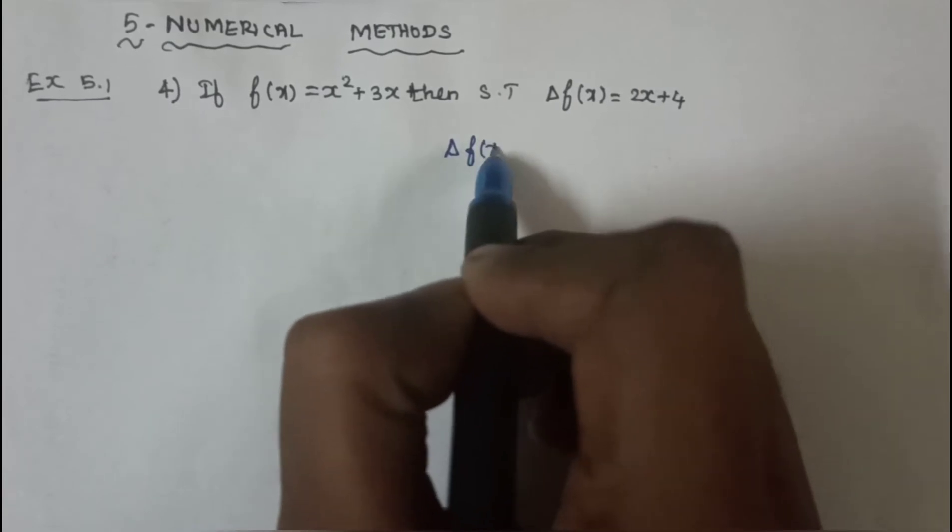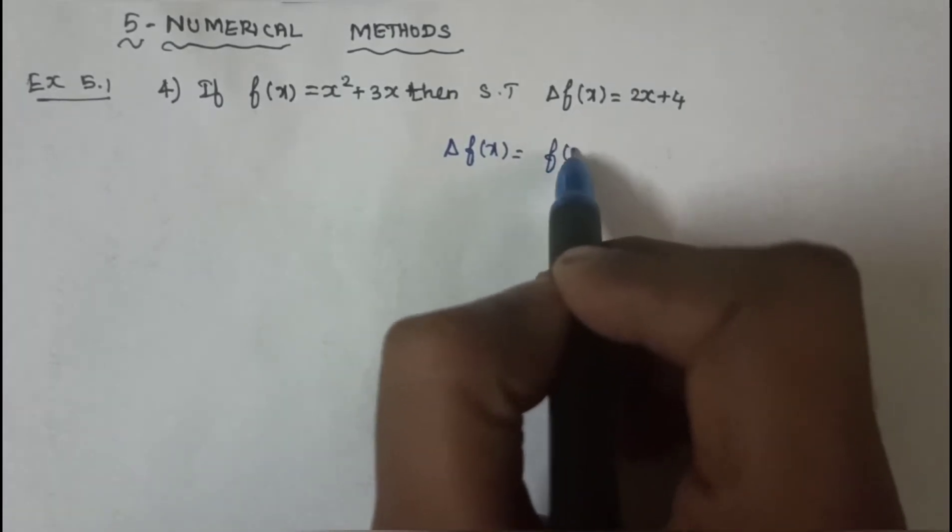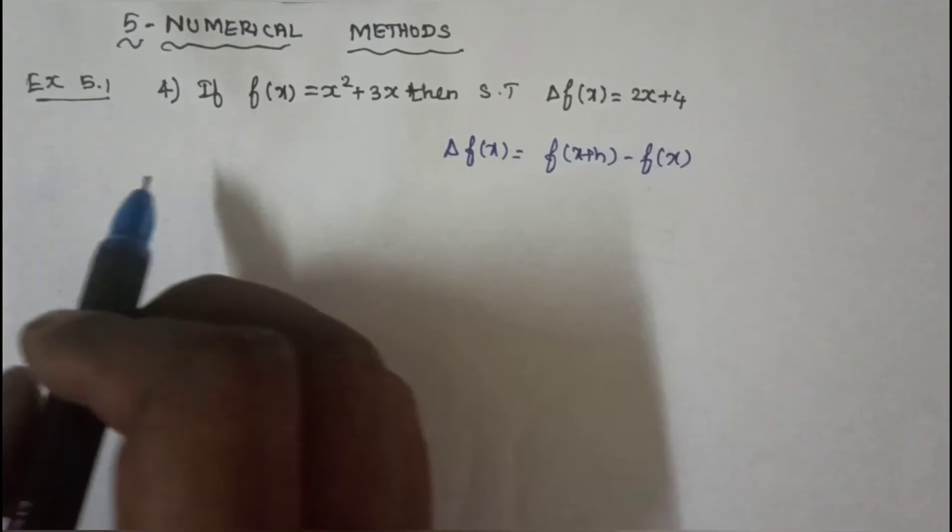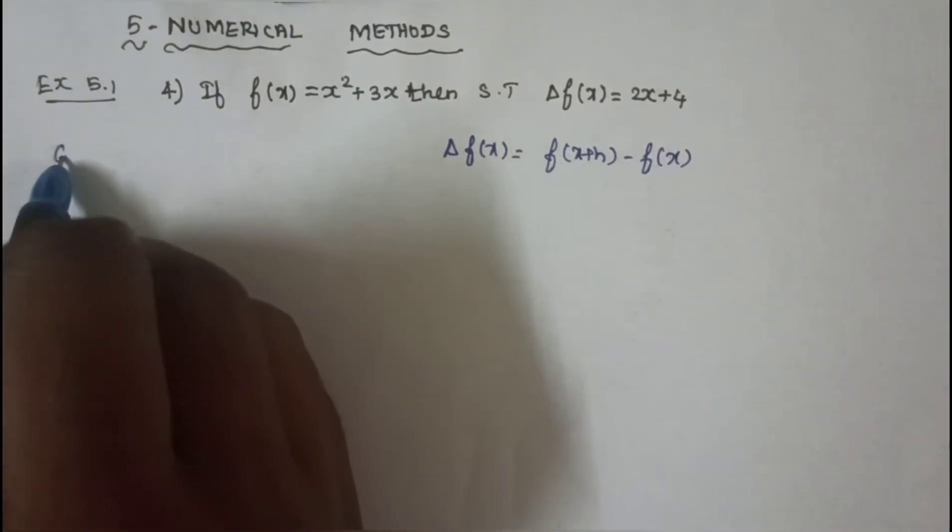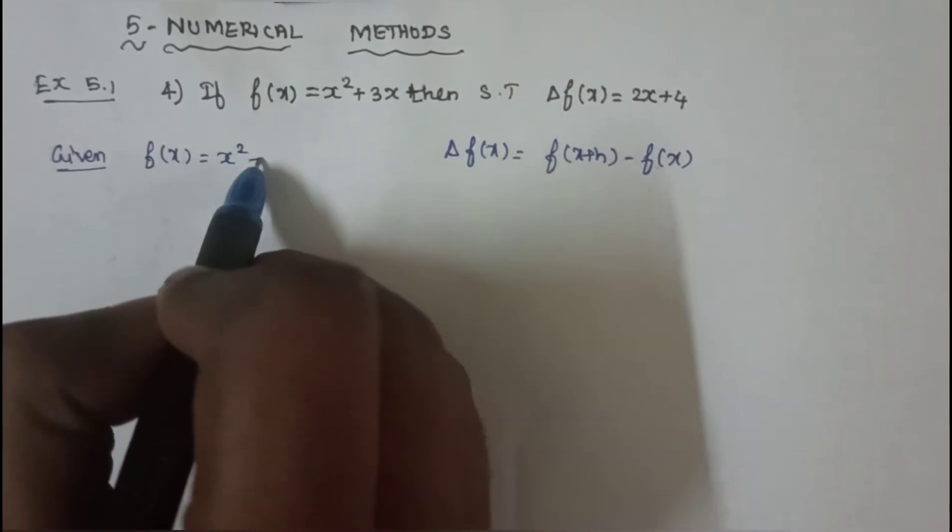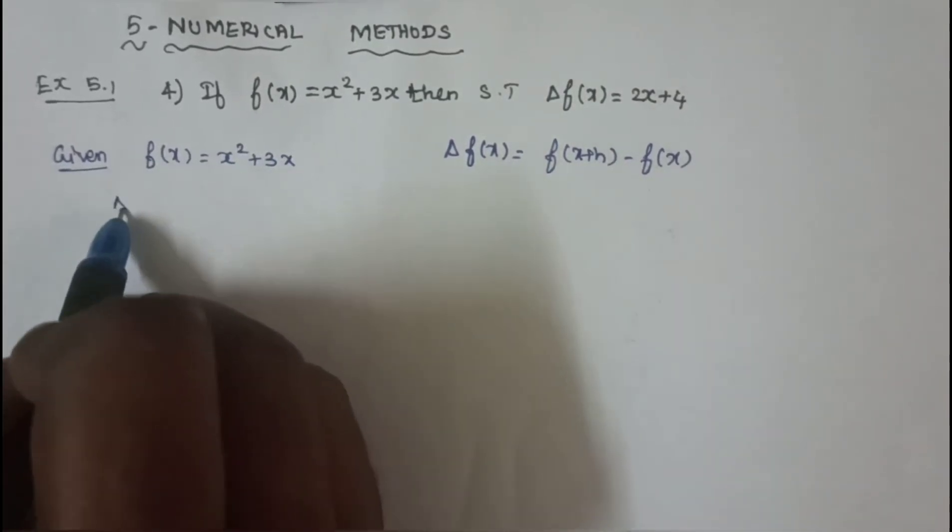Delta f(x) equal to f(x+h) minus f(x). Given f(x) equal to x square plus 3x.